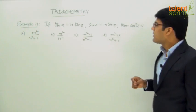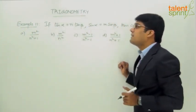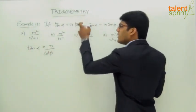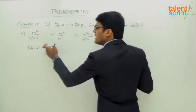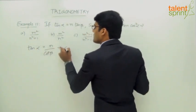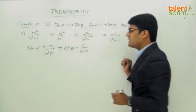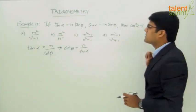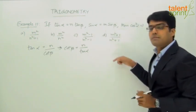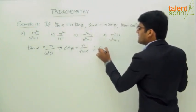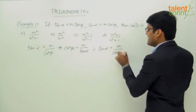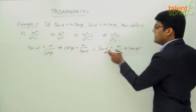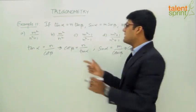The first equation says tan α equals n tan β. Since tan β = 1/cot β, this becomes tan α = n/cot β, so cot β = n/tan α. For the second equation, sin α equals m sin β. Since sin β = 1/cosec β, we get sin α = m/cosec β, so cosec β = m/sin α. We now have cot β = n/tan α and cosec β = m/sin α.